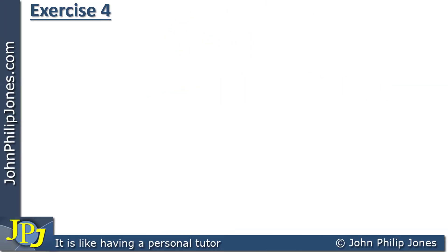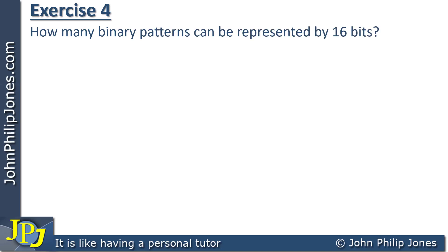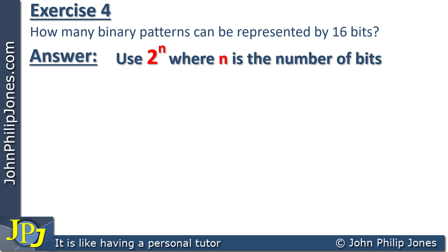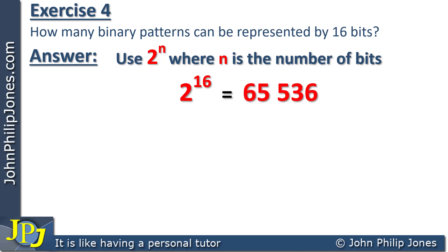How many binary patterns can be represented by 16 bits? This is another one worth memorizing. Using two to the n where n is the number of bits, it becomes two to the 16. Using a calculator, the answer is 65,536 possible combinations.